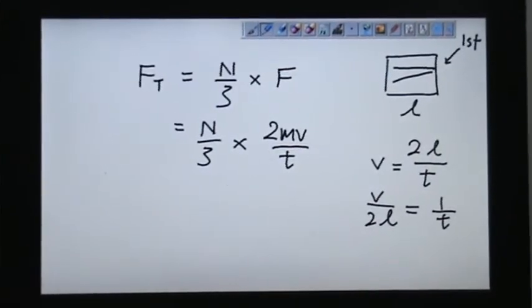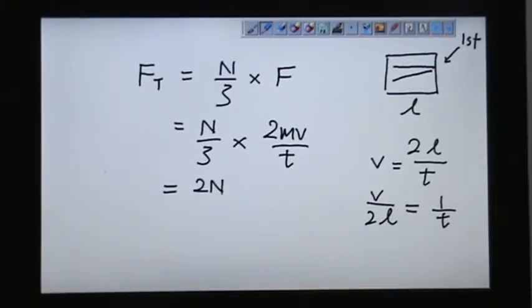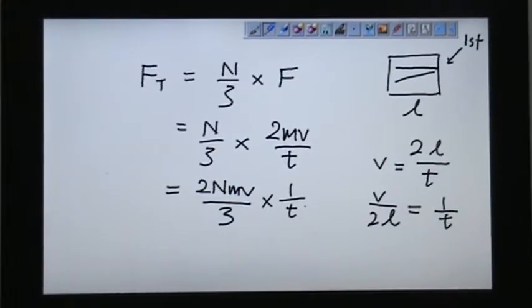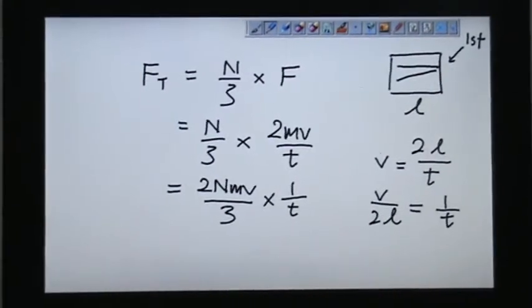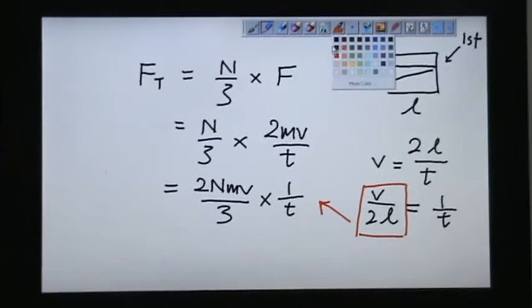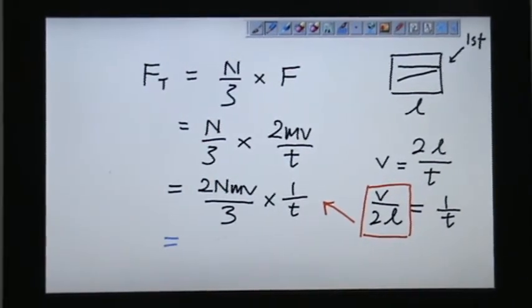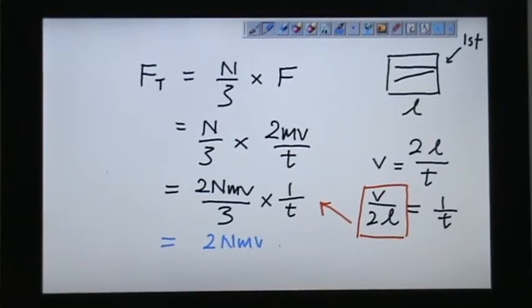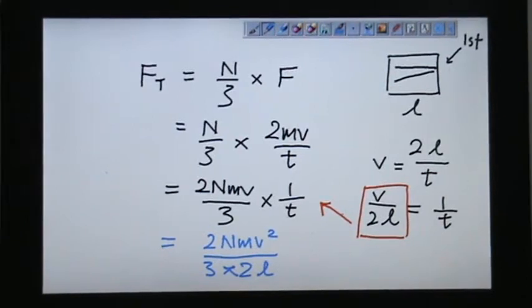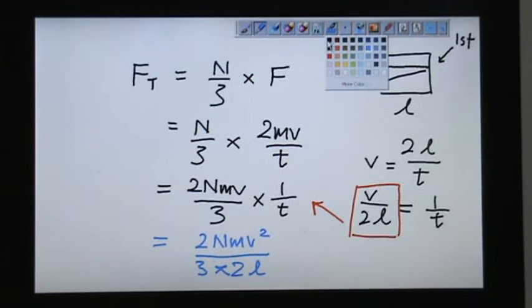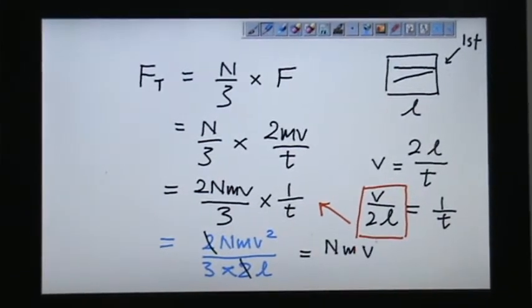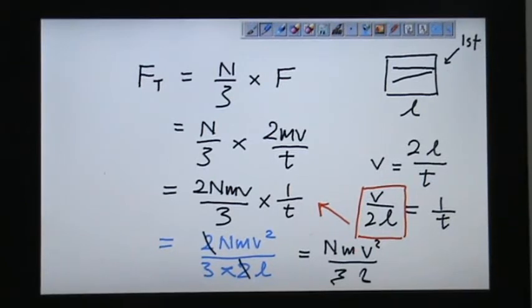Why do I need 1 over t? Because back to this formula, I could write something like this: 2Nmv over 3 times 1 over t. So I could actually put this into this formula. And a little bit of arrangement of the formula, I get 2Nmv squared over 3 times 2L. And do some elimination. You realize that I can cut the 2, cut the 2. I have finally Nmv squared over 3L.